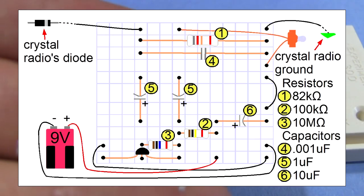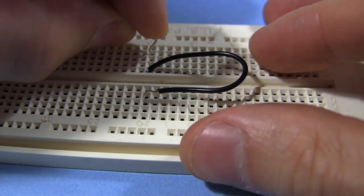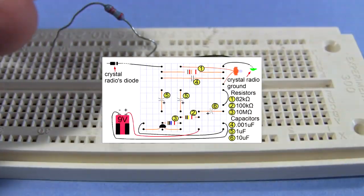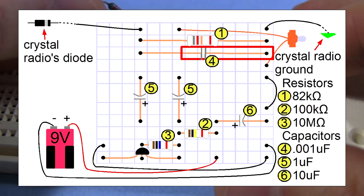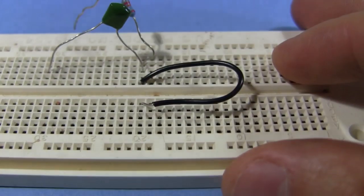The first part we'll plug in is the 82 kilo ohm resistor. We'll just plug one end in for now. And that goes in the ground row. And the same for the 0.001 microfarad capacitor. Plug one end into the ground row. Leave the other end unplugged.